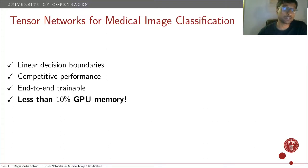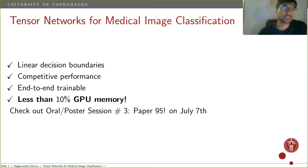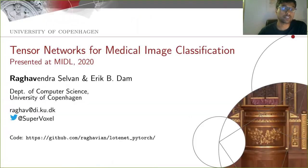If this peaks your interest, stop by at the oral and the poster session number 3 on July 7th and look out for paper number 95, which is the Tensor Networks for Medical Image Classification.